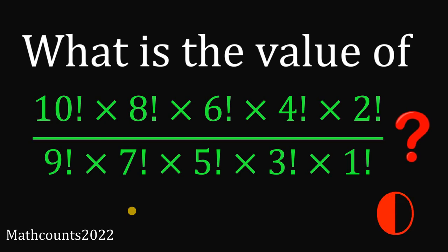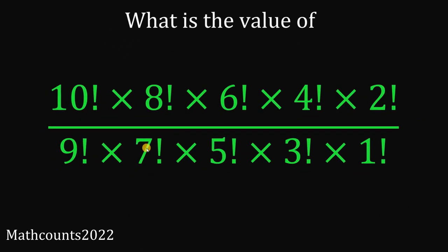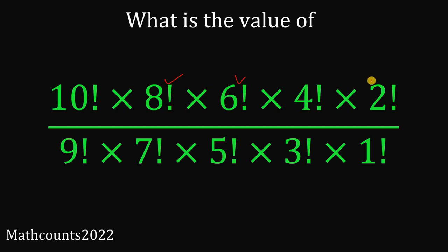Let's answer this question together. So the question is: what is the numerical value of 10 factorial times 8 factorial times 6 factorial times 4 factorial times 2 factorial, all over 9 factorial times 7 factorial times 5 factorial times 3 factorial times 1 factorial?